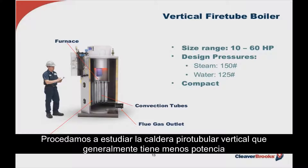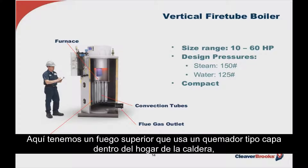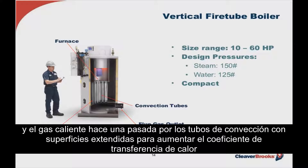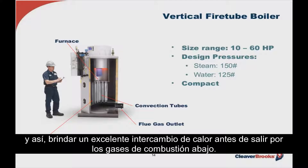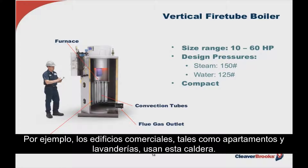The vertical fire tube border typically has a smaller horsepower range and fires either from the top down or with the burner mounted on the side at the bottom. This picture shows a top fire using a mantle-type burner firing into the furnace, with the hot gases making one pass through the convection tubes using extended surfaces to greatly enhance the heat transfer coefficient, affording excellent heat exchange before exiting through the flue gas outlet at the bottom. These borders are used in commercial and industrial applications especially where space is an issue, such as apartments and laundries.